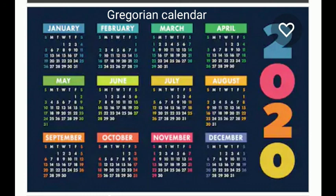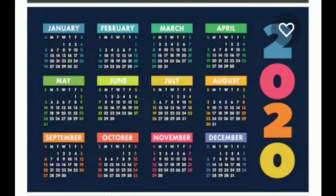Tell me, which are the 12 months? January, February, March, April, May, June, July, August, September, October, November, and December. There are 12 months in a year.